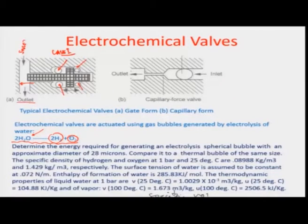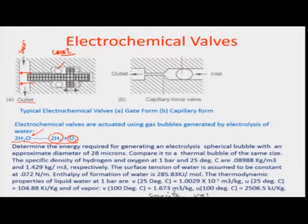It becomes a two-phase bubble: a gas phase surrounded by liquid water, part of which has been hydrolyzed into gas. The rate at which these bubbles grow can be customized to drive a gate. If the two front bubbles grow slower than the rear bubbles, the gate moves forward. Conversely, if front bubbles are created at a higher rate, the gate moves back, allowing flow — reversing the valve position.